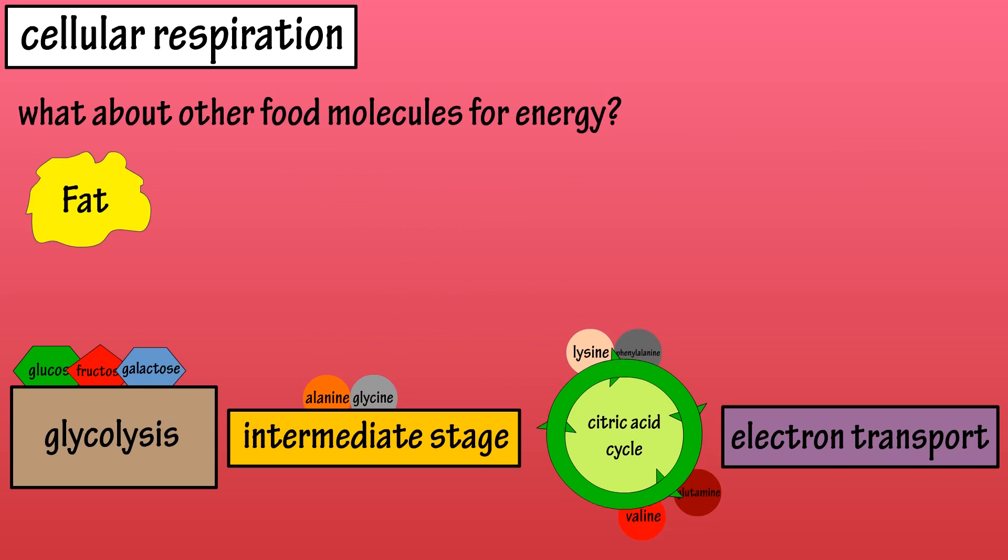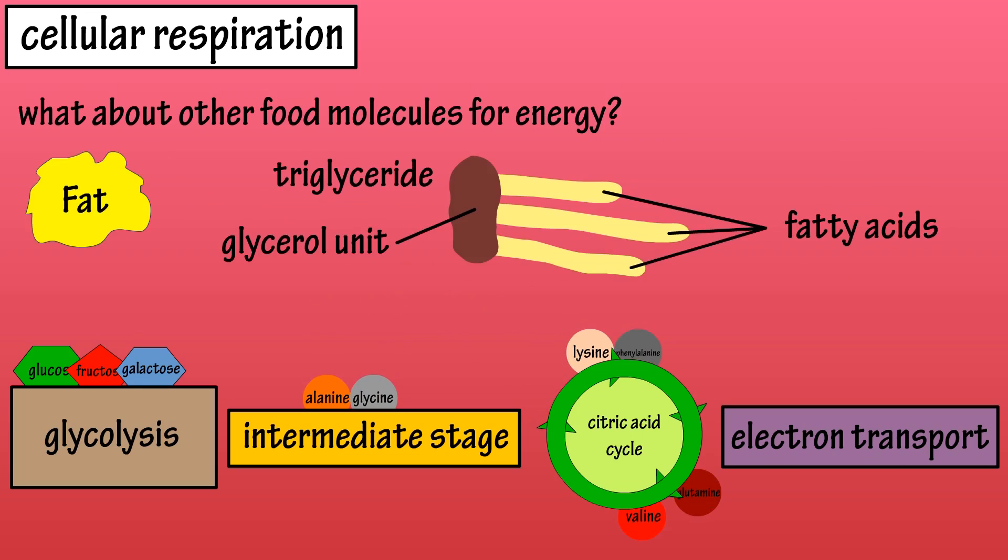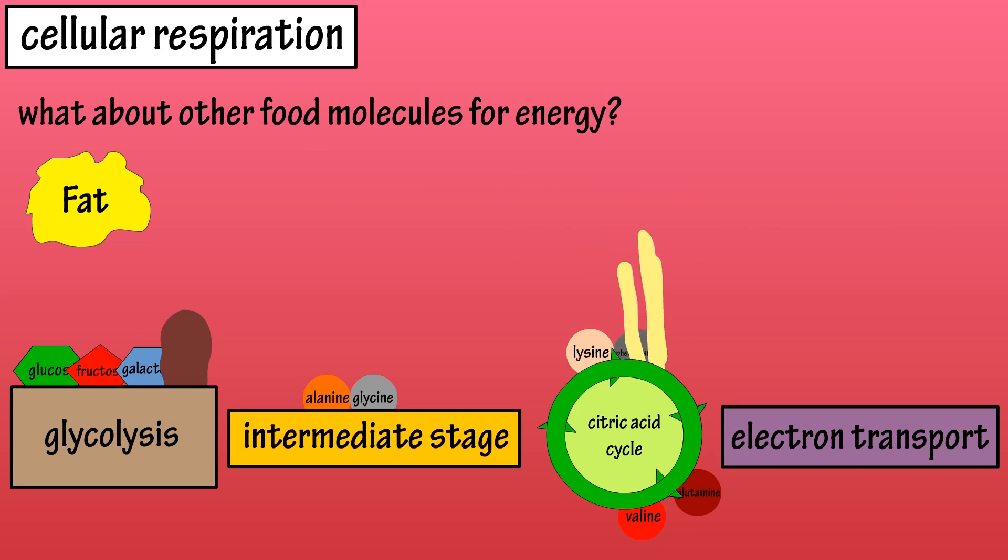Lipids or fats can also enter the pathway. Triglycerides, the main form of fat, consists of four parts: a glycerol unit and three fatty acids. The glycerol unit can be modified and enter the pathway in the glycolysis stage, and the fatty acids can be broken down further and enter at the citric acid cycle stage.